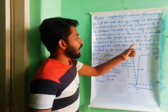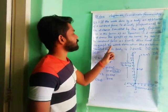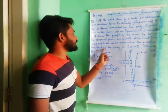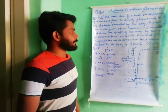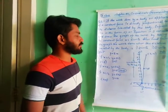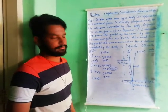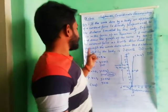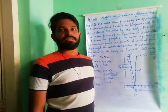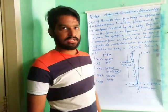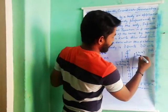Coming to the last part: also read from the graph the work done when the distance travelled by the body is 2 units and when the distance is 0 units. So we are reading from the line y equal to 5x.